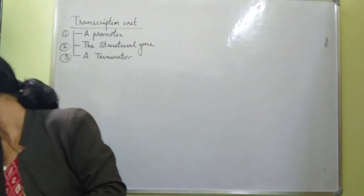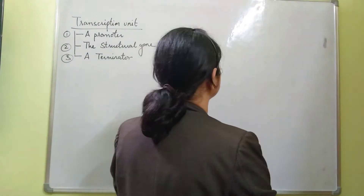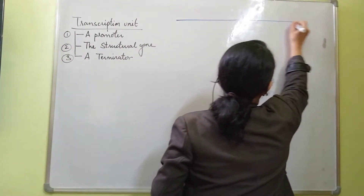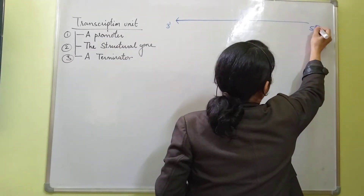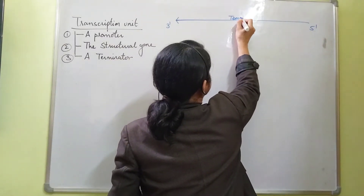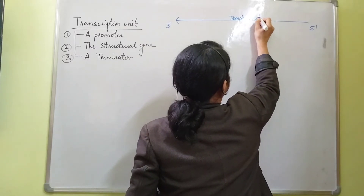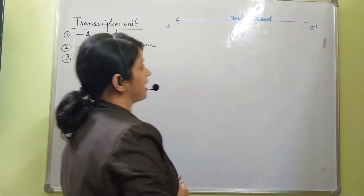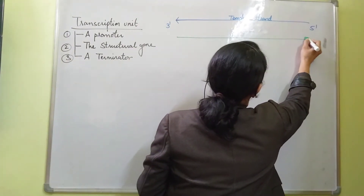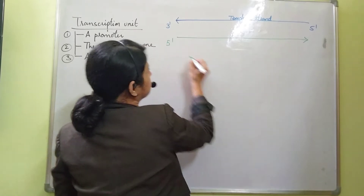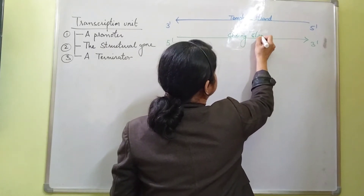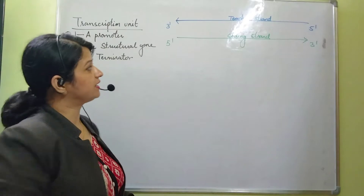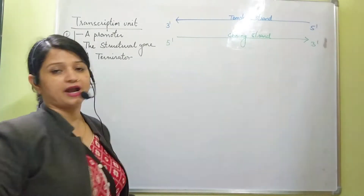First of all we will draw the structure of a transcription unit. In a double-stranded DNA there are two strands. The strand which has polarity 3' to 5' is known as the template strand, and the other strand which has polarity 5' to 3' is known as the coding strand.